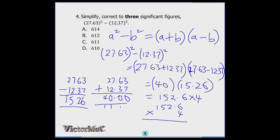Multiplying: 4 × 6 = 24; 4 × 2 = 8 plus 2 = 10, write 0 carry 1; 4 × 5 = 20 plus 1 = 21, write 1 carry 2; 4 × 1 = 4 plus 2 = 6. Result is 610.4. Rounding to three significant figures, the fourth digit 4 rounds down, giving 610. The correct option is option D.